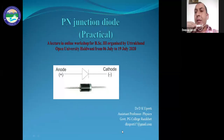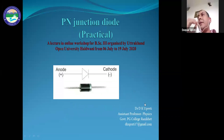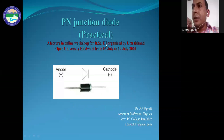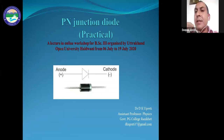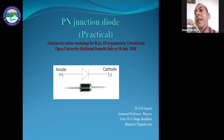All semiconductor instruments need a p-n junction. There are uni-junction devices and bi-junction devices. The practical we are going to discuss today is the p-n junction diode.